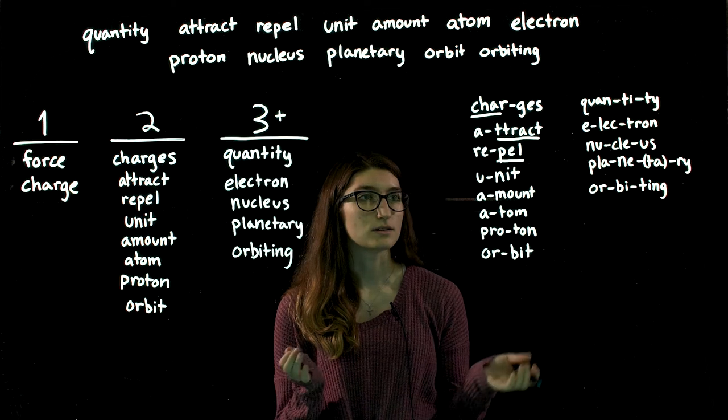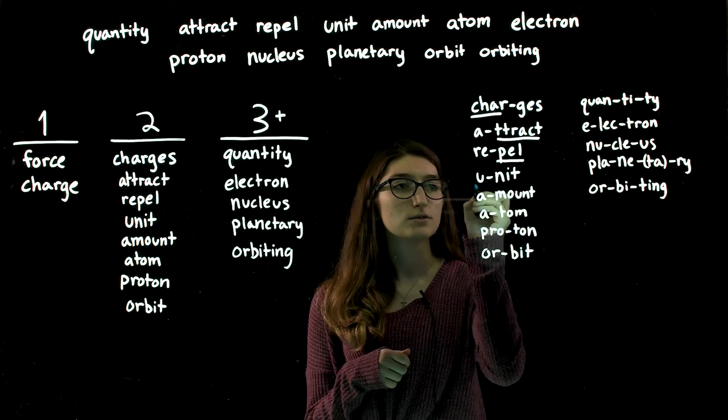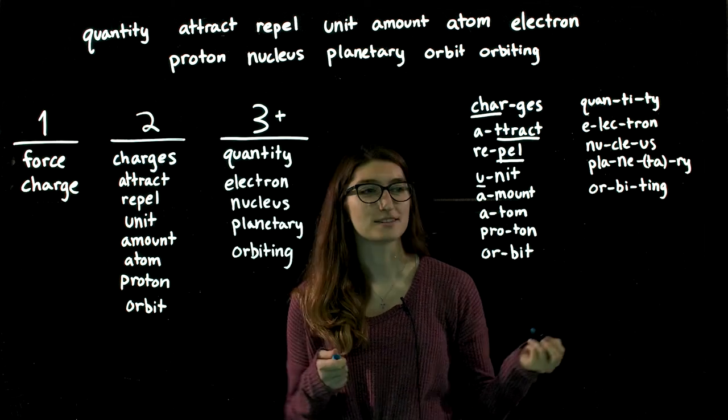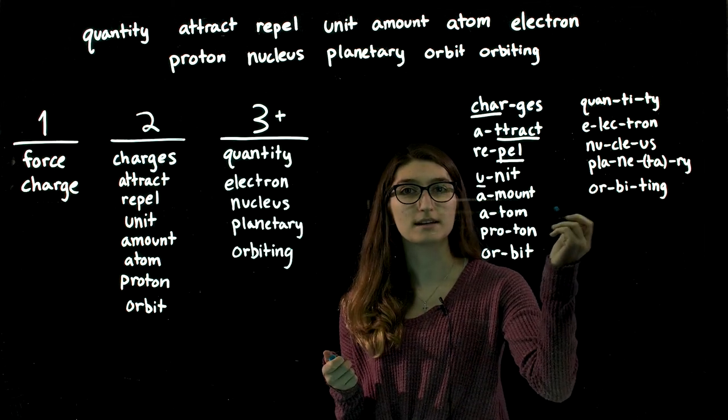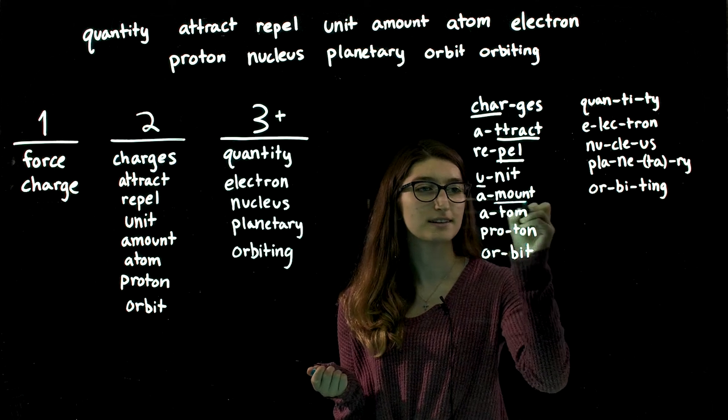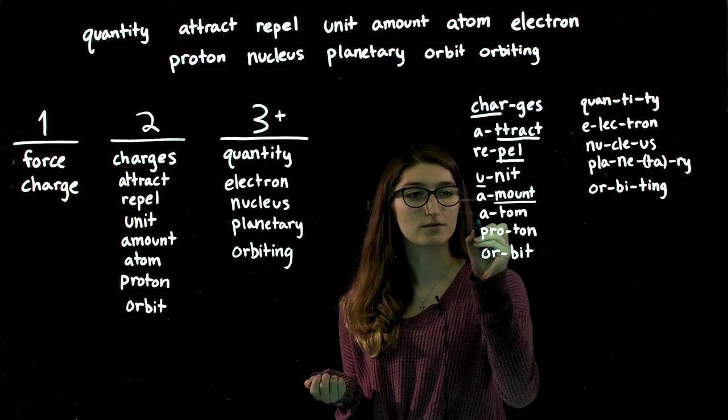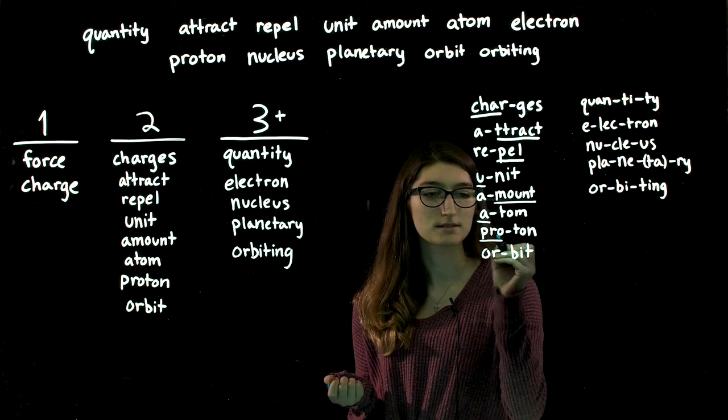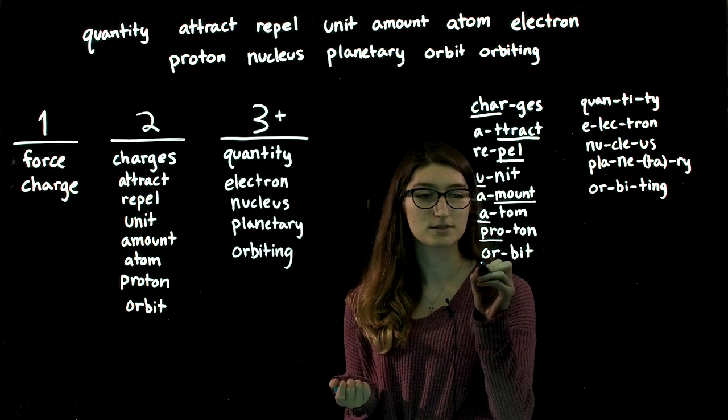Unit is the opposite of both repel and attract, and you can hear the first syllable be stressed, just like amount. So amount, you can hear the second syllable is stressed. Atom is like unit, with the first syllable being stressed. Proton has the first syllable stressed, and orbit has the first syllable stressed.